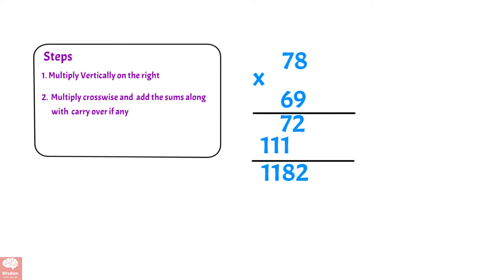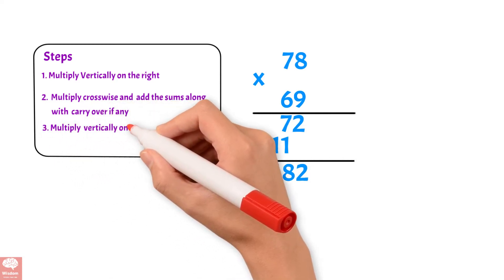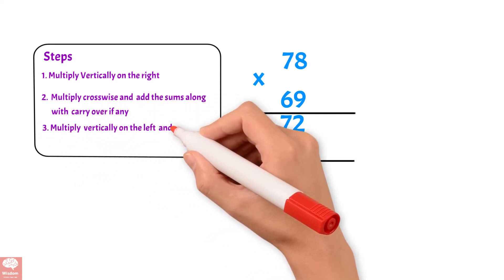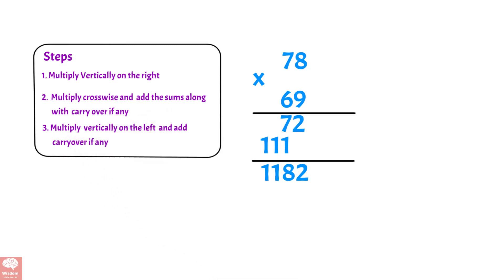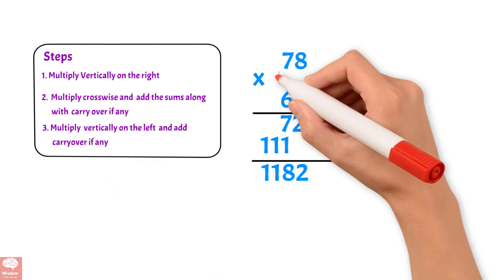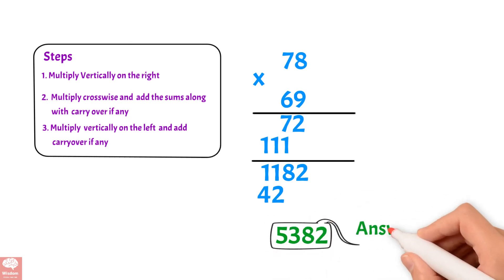Step 3: Multiply vertically on the left and add carryover if any. 7 times 6, we get 42. Adding the carryover 11 to 42, we get 5382. So 5382 is the answer.